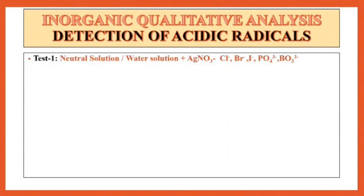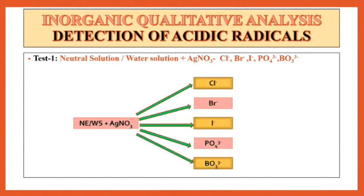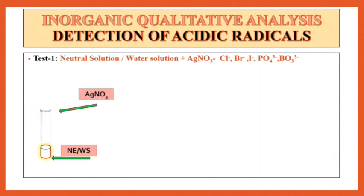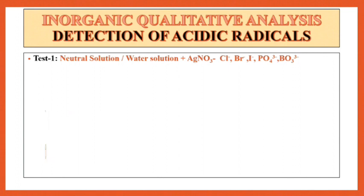The first test for the detection of acidic radicals is addition of HNO3 in neutral extract or in water solution. Then observe whether Cl⁻, Br⁻, I⁻, PO4³⁻, or BO3³⁻ is present. Take neutral extract or water solution. To this solution, add HNO3 drop wise. After addition of HNO3, check this solution well.